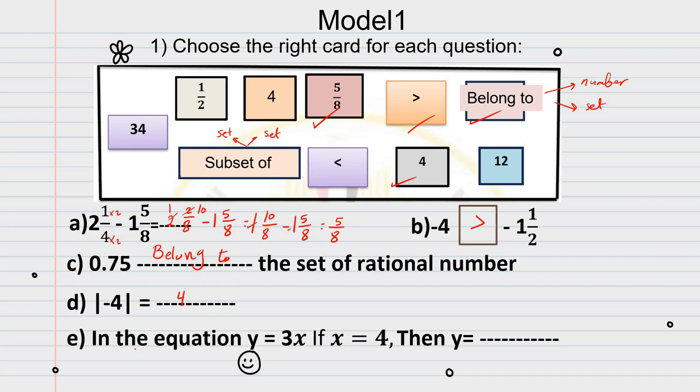The last question here is in the equation y equals 3x. If x equals 4, then y equals what? As we agreed before, 3x means 3 times x. So, if I substitute x by 4, or if I take away x and I put 4 instead of it, it will be y equals 3 times 4. And 3 times 4 equals 12. So, this is the last card we have here in this slide.